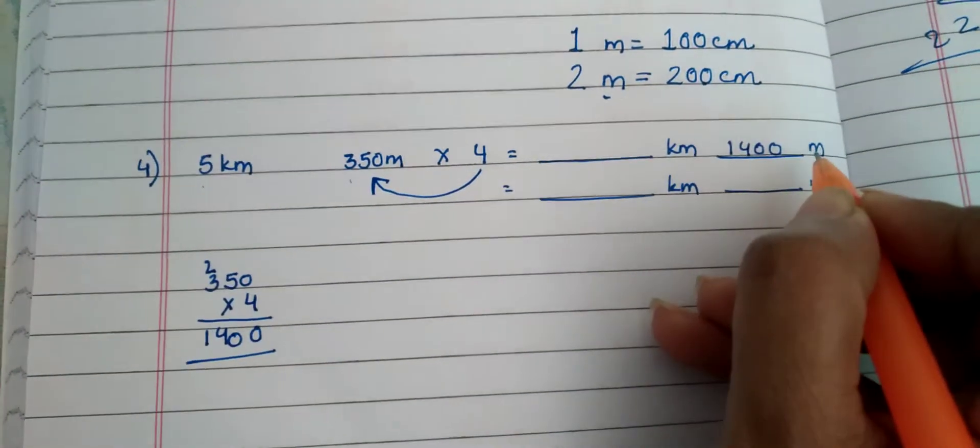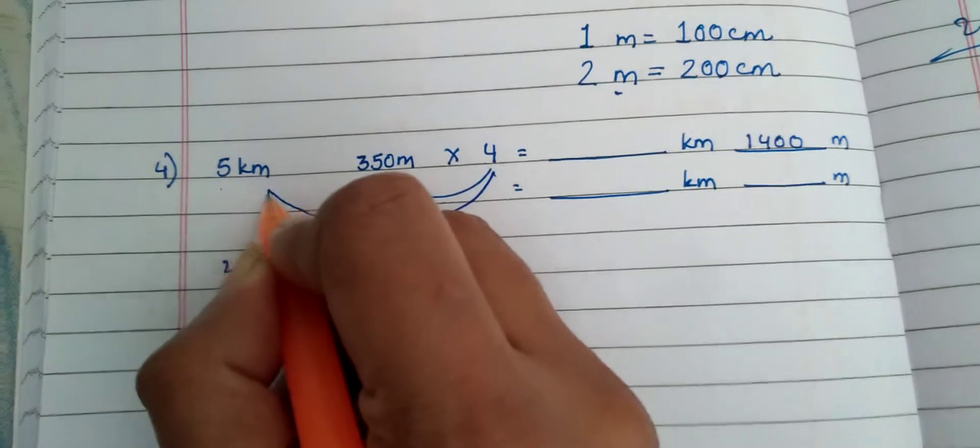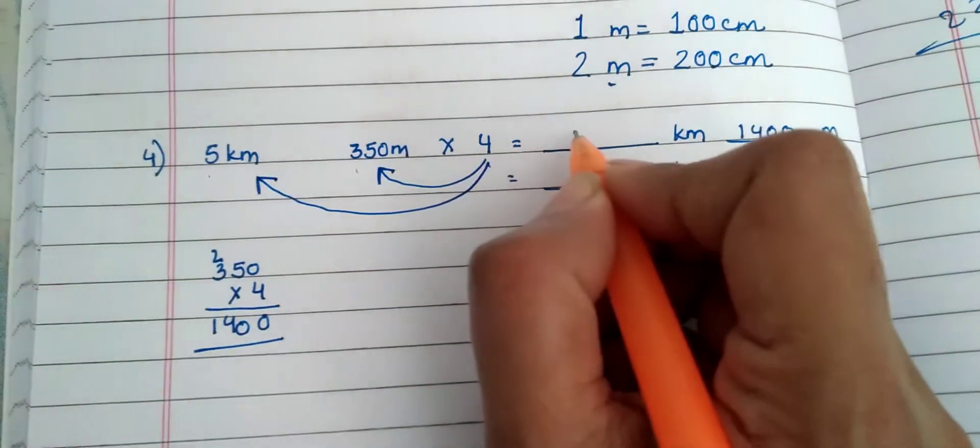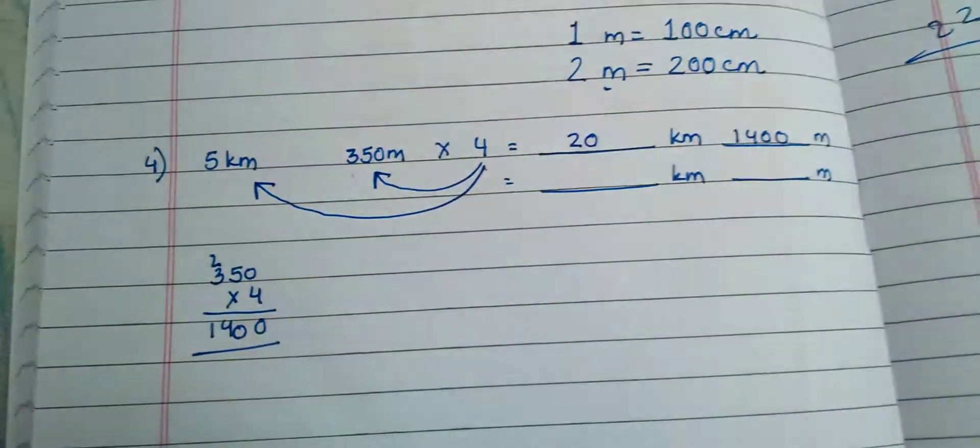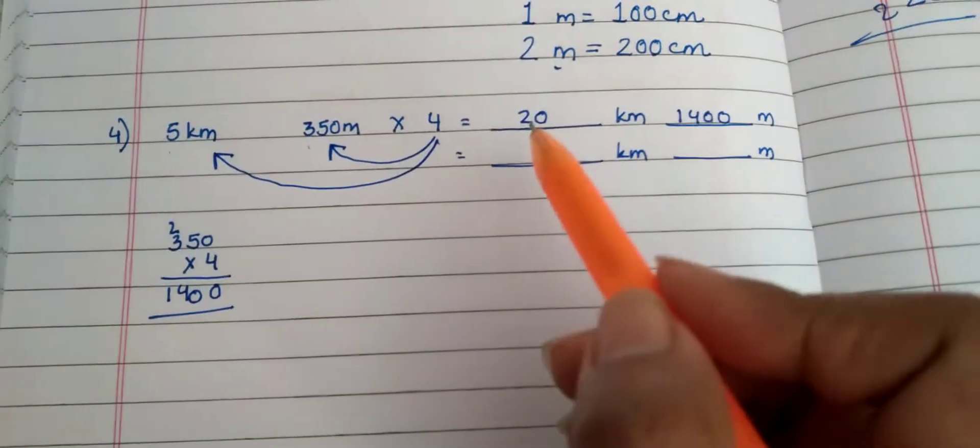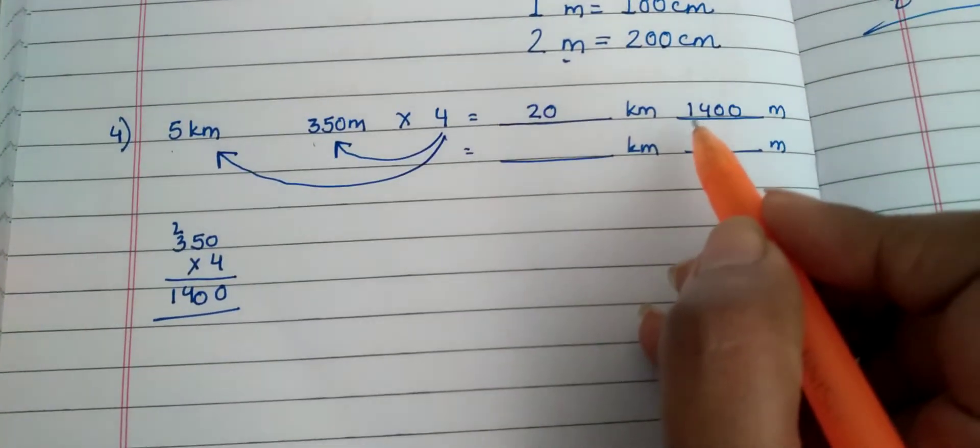This is meter, so I'll write in meter. Now 4 will be multiplied by kilometers: 4 × 5 = 20 kilometers, 20 kilometers. Understood? See, this step is quite easy. Now the second step, you have to pay attention here.